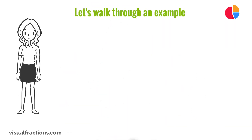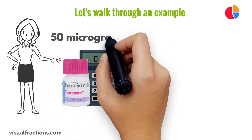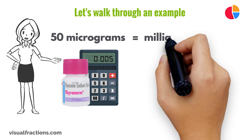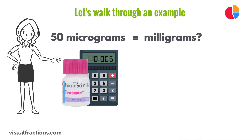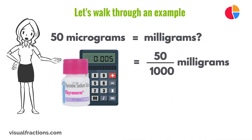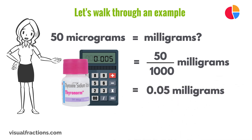Let's walk through an example. Say you have a medication with a dosage of 50 micrograms, and you need to convert it to milligrams. We start by dividing 50 by one thousand. This gives us 0.05 milligrams.